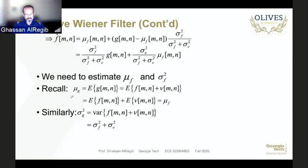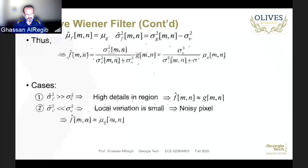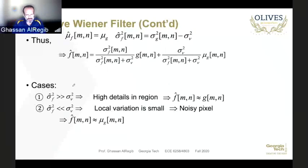To summarize: f-hat equals this ratio times g plus the ratio times the mean value of g.